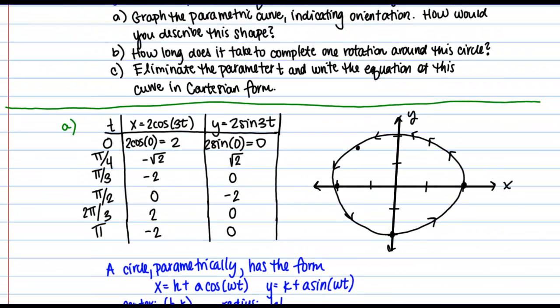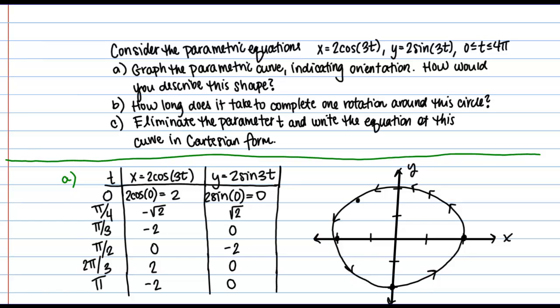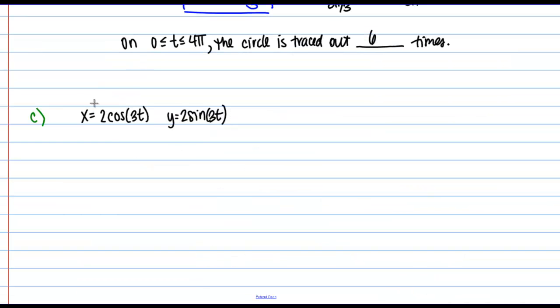Alright, so let's finish this out with part C. In part C, we're asked to eliminate the parameter T and write the equation of this curve in Cartesian form. So here's my original parametric equations again. So how do I go from these to a Cartesian representation of the curve? Well if I know that I'm working with a circle, there's a pretty straightforward way to do this. We can look at X squared plus Y squared.